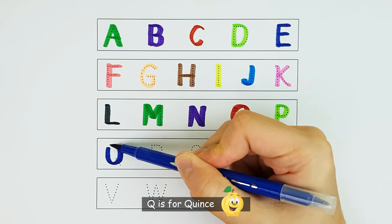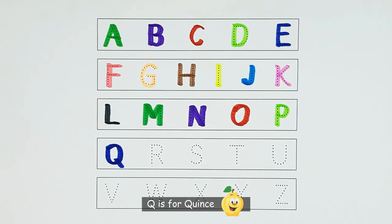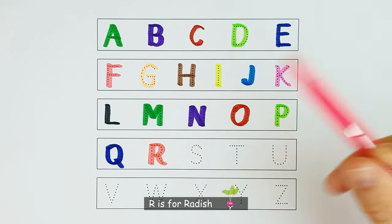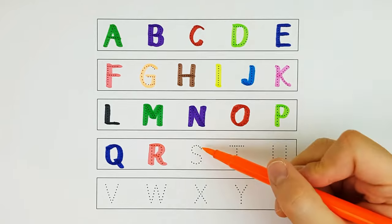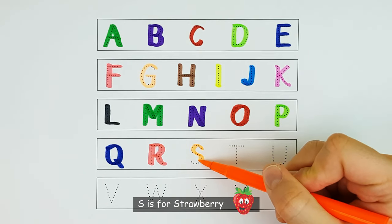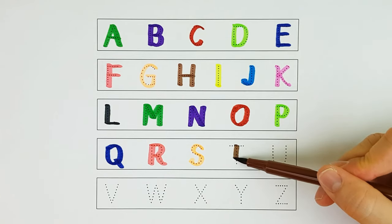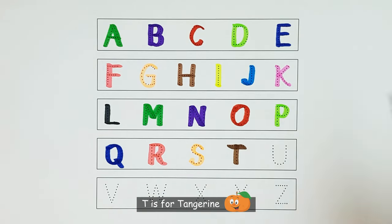Q. Q is for quince. Q. R. R is for radish. R. S. S is for strawberry. S. T. T is for tangerine. T.